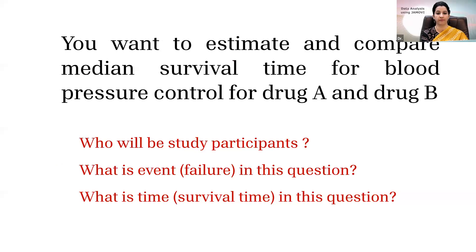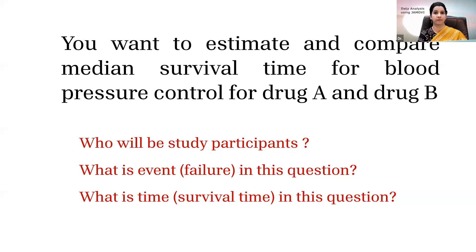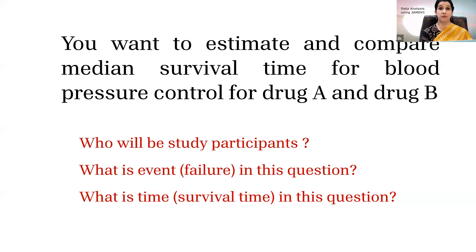The second question: if you want to estimate and compare the median survival time for blood pressure control for drug A and drug B, the study participants would be hypertensive patients — one group for drug A and another for drug B. The event or failure would be the control of blood pressure, which is a positive outcome. The people who did not achieve control — their time would be the survival time in this question.